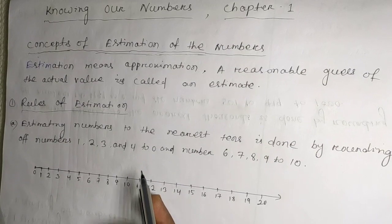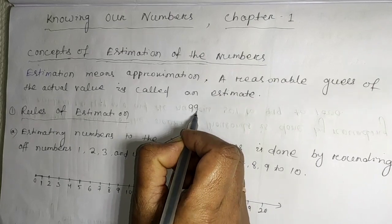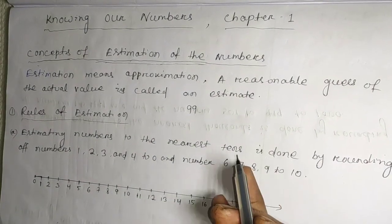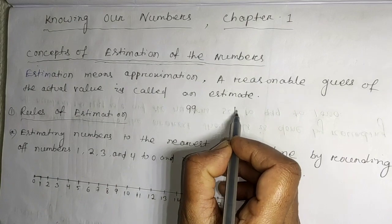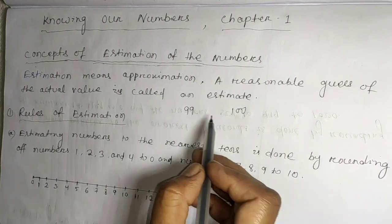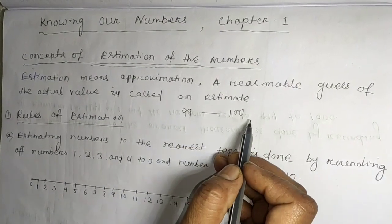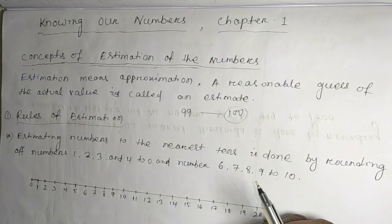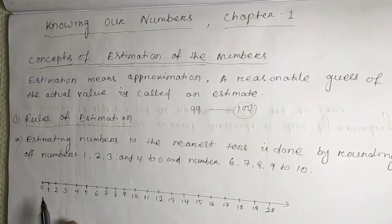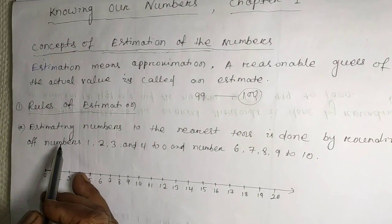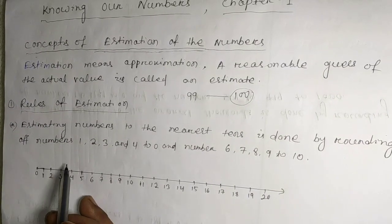For example, suppose you buy some goods at a shop and your total price comes to around ninety-nine. If you don't have exact change, you tell the shopkeeper to round it to the nearest value — so ninety-nine becomes one hundred.